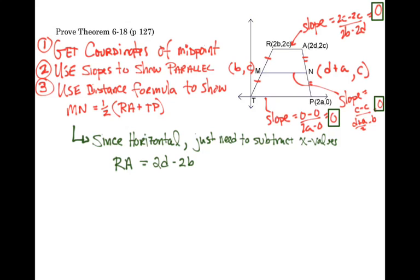Those are the x values: 2d minus 2b. For the next one, MN, it's d plus a minus b. And for the last one, TP, it's 2a minus 0, or just 2a.